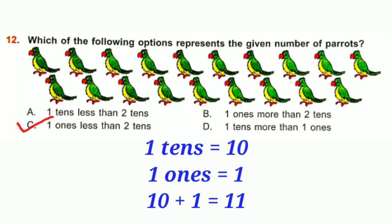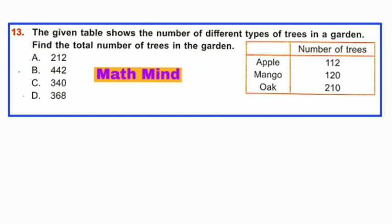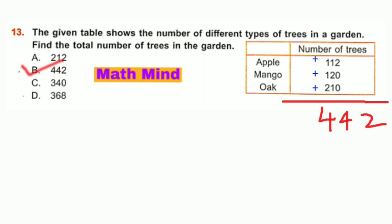Question number 13: The given table shows the number of different types of trees in a garden. Find the total number of trees. Apple trees: 112, Mango trees: 120, Oak trees: 210. Adding all trees, option B is correct: 442.